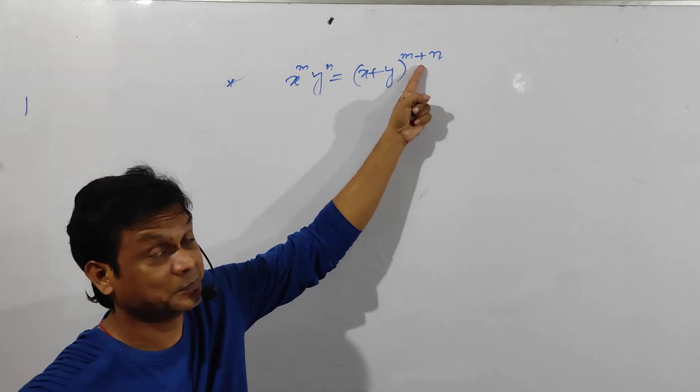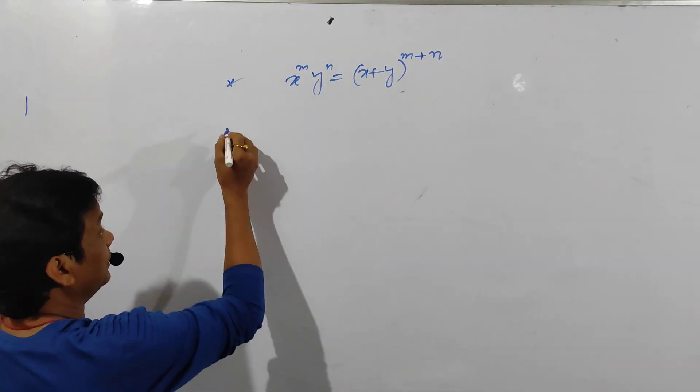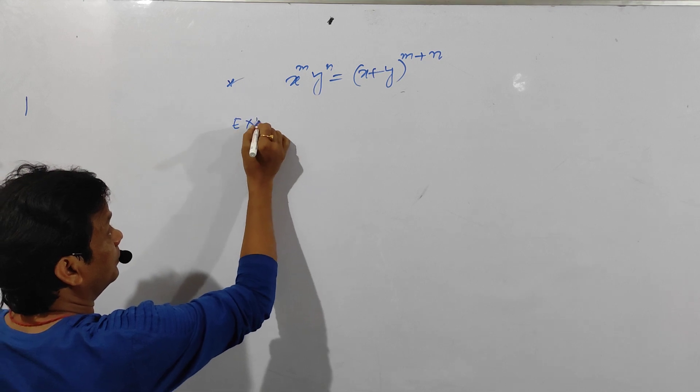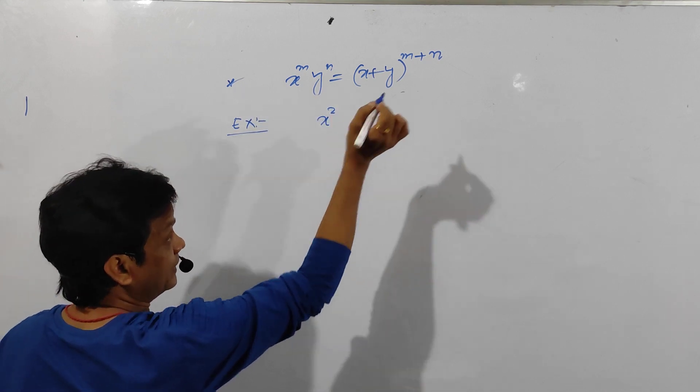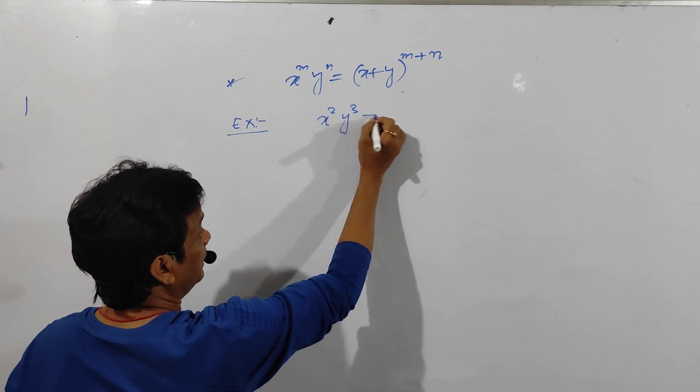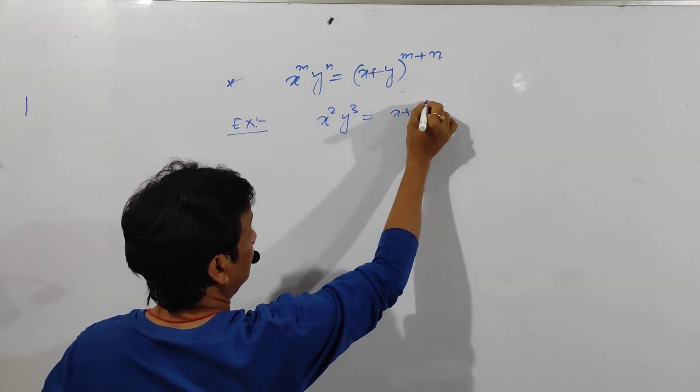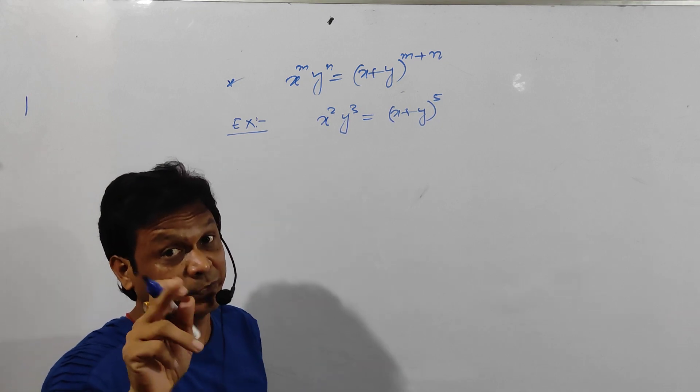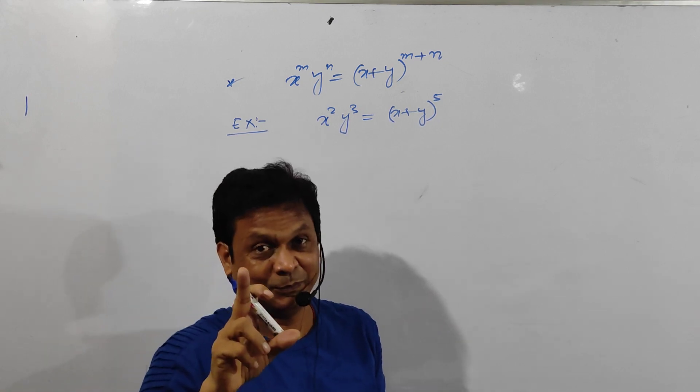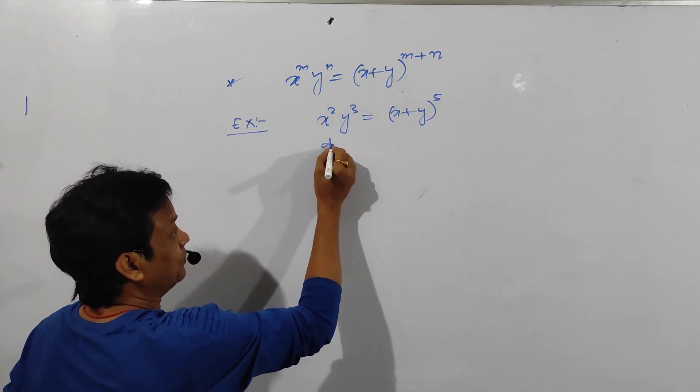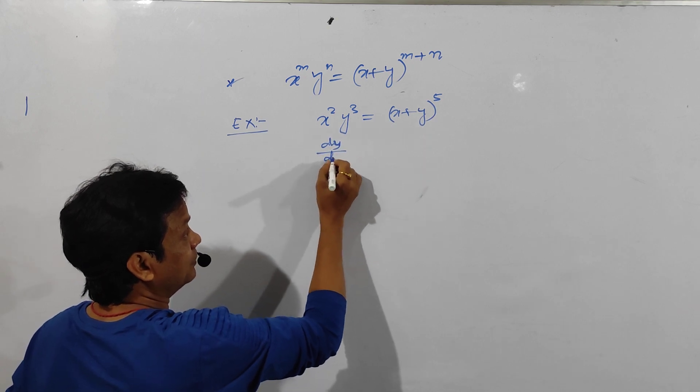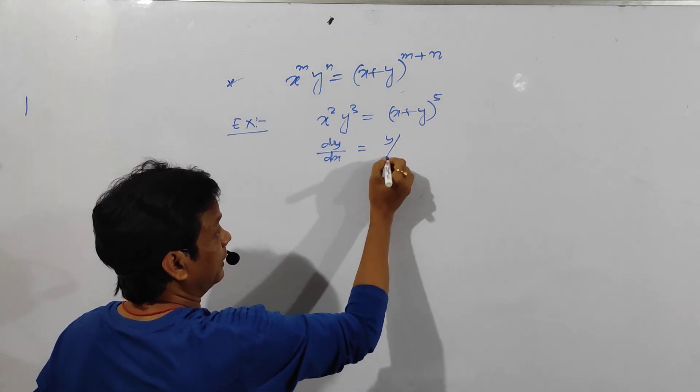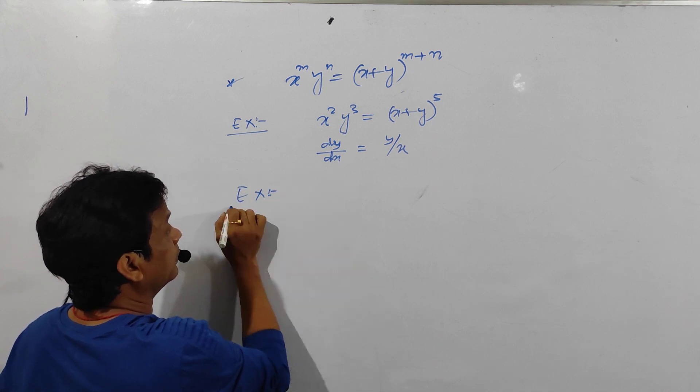See an example: x to the 2, y to the 3, the example which I was given, equals x plus y to the 2 plus 3, which will be 5. Then only this formula is applicable. Okay, so dy by dx will be y by x.